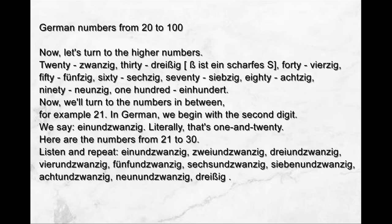Now we'll turn to the numbers in between. For example, 21. In German, we begin with the second digit. We say 'einundzwanzig' — literally, 'one and twenty'. Here are the numbers from 21 to 30: einundzwanzig, zweiundzwanzig, dreiundzwanzig, vierundzwanzig, fünfundzwanzig, sechsundzwanzig, siebenundzwanzig, achtundzwanzig, neunundzwanzig, dreißig.